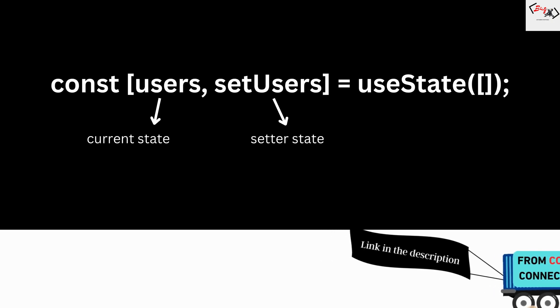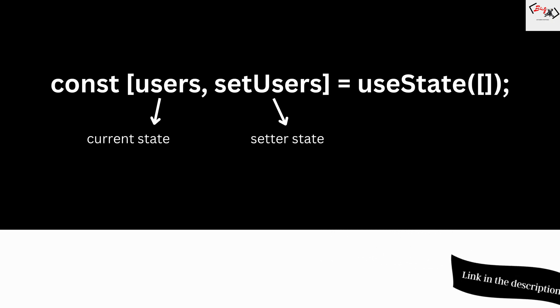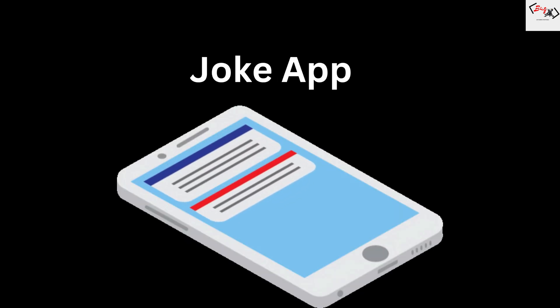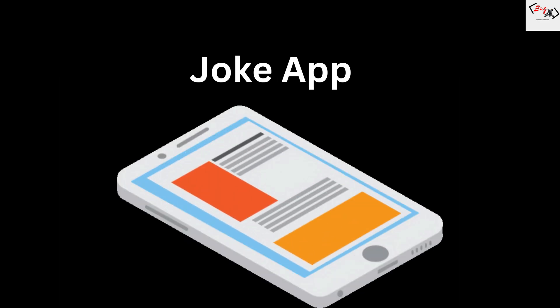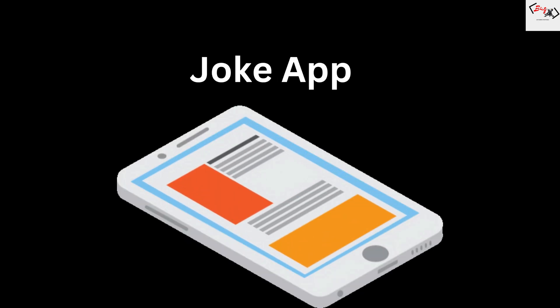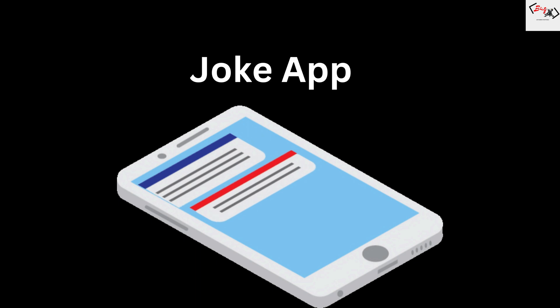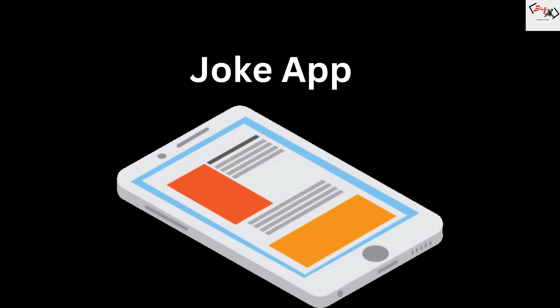The useState hook takes an initial value for your state and returns an array with two elements: the current state value and a setter function that you can use to update the state. For example, let's say we want to create a simple app that shows a random joke every time a user presses a button.